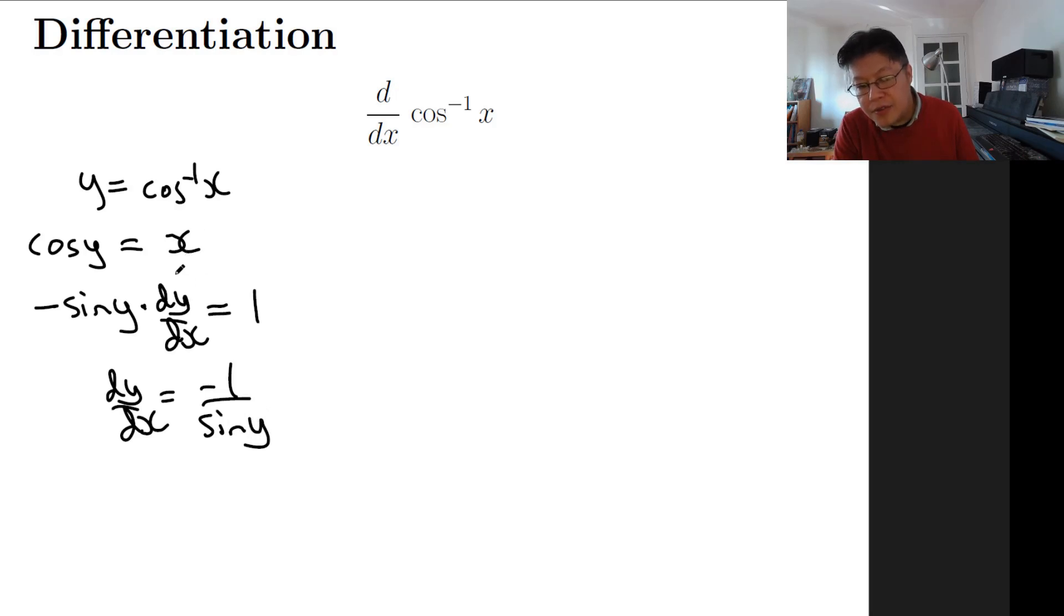We're going to use the triangle method. There'll be two methods - you can either use identities or a triangle. I'll use the triangle method here, so the first thing to do is draw a triangle.